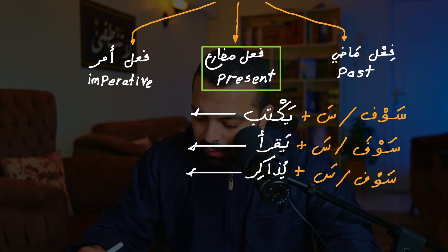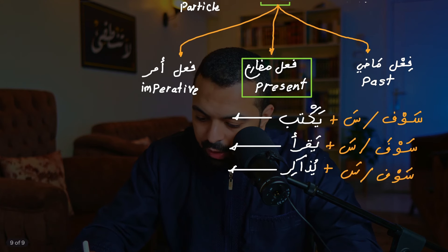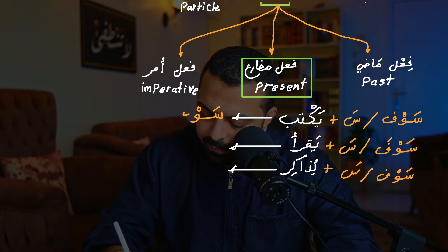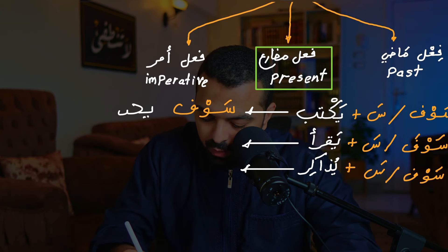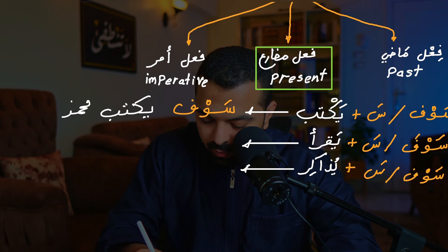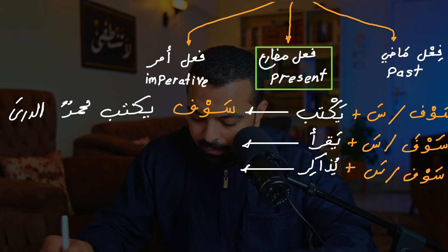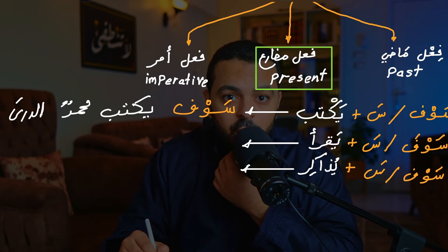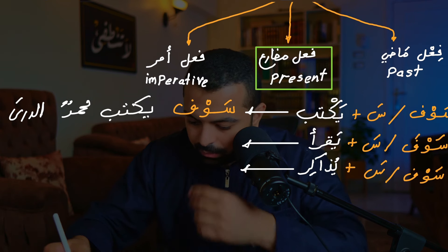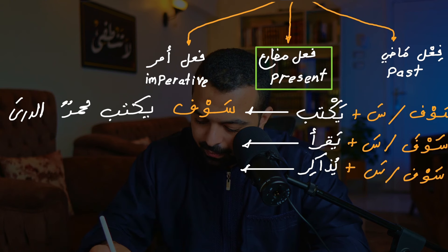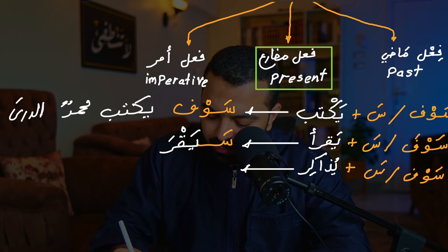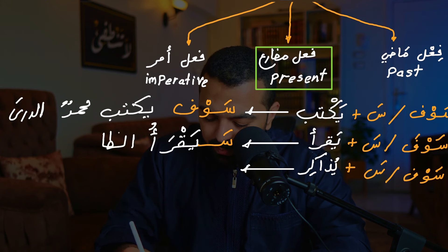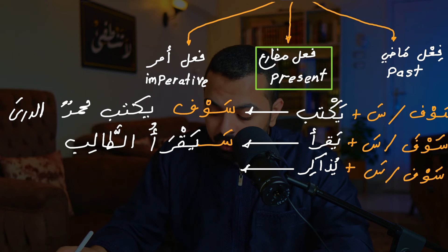Let's apply this. I can say يكتب — he writes. I can say سوف يكتب محمد الدرس — Muhammad will write the lesson. Or I can say سيقرأ الطالب — سا يقرأ الطالب — which means the student will read.